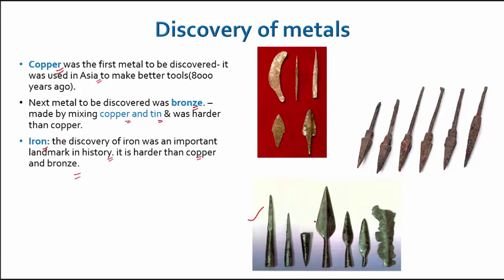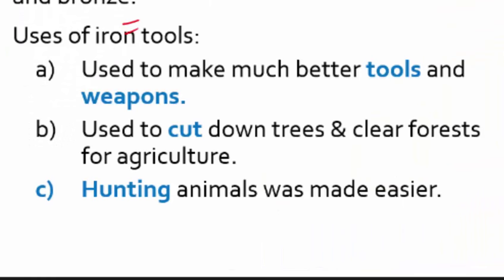The uses of iron tools were significant. First, they used iron to make much better tools and weapons. Then they used iron to cut down trees and clear out forests so they could cultivate land and grow crops using agriculture. They also used it for hunting animals, which was made easier because iron tools were much sharper, more sturdy, and a lot stronger.